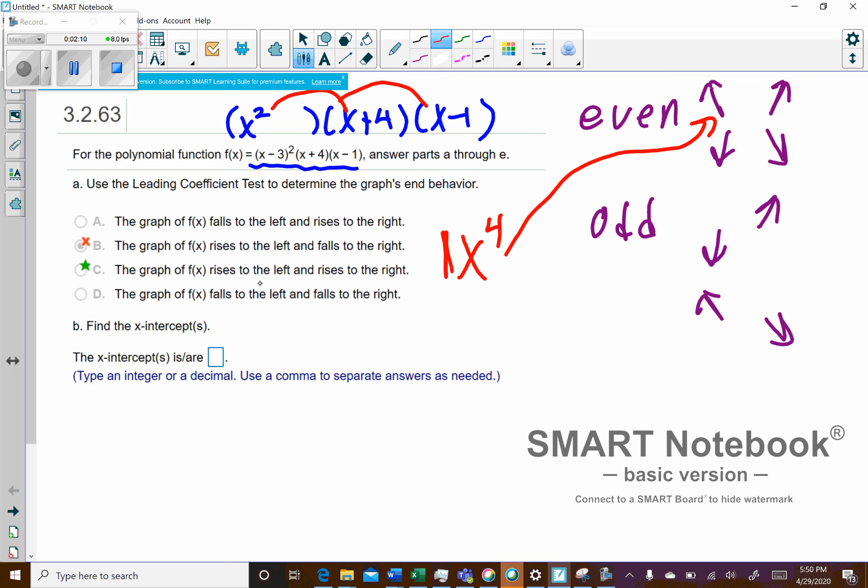So let's see, rise to the left, rise to the right. And as you can see, it's marked C right there. So some of the other questions they're going to ask you is x-intercepts.